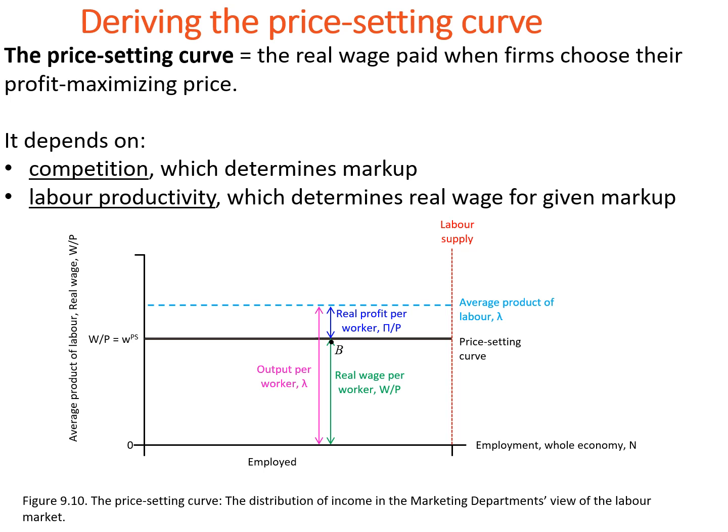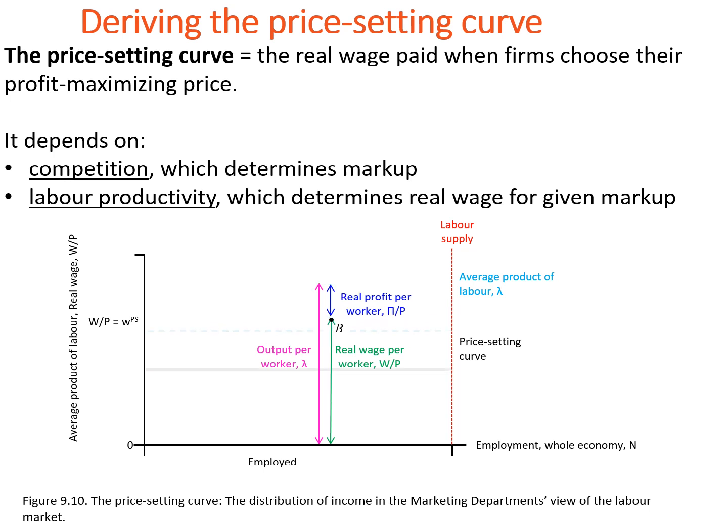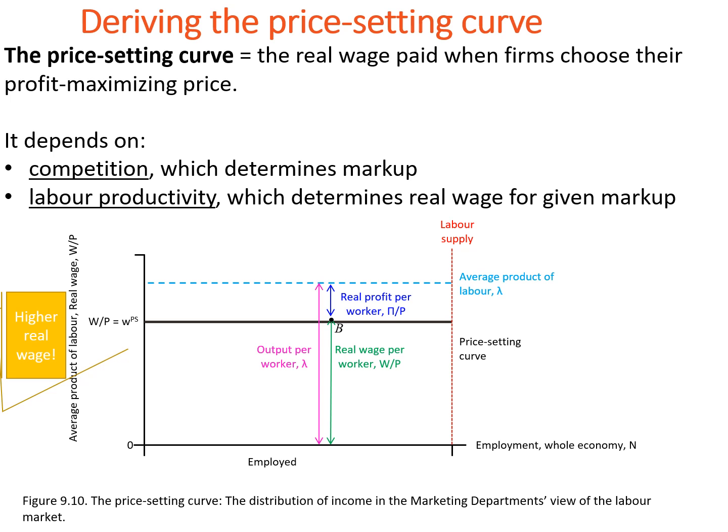The second thing that affects the price setting curve is labor productivity. For any given markup, the level of labor productivity determines the real wage. The higher the level of labor productivity, the higher the real wage that is consistent with a given markup. Higher labor productivity shifts the blue line upwards, and given the markup did not change, the price setting curve will shift upwards as well, which increases the real wage.